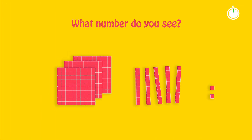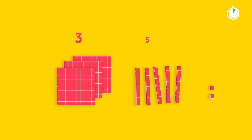What number do you see? I see 352. That's right. How would you divide this number by 10? I would move the decimal point one place to the left. But we would still have three hundreds, five tens, and two ones. That doesn't make much sense.